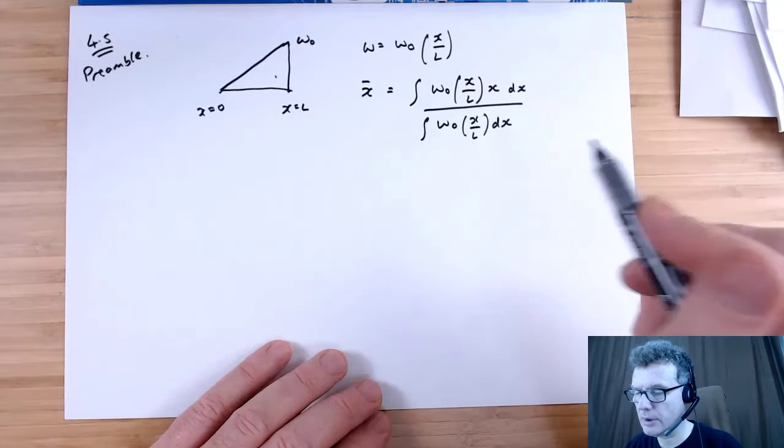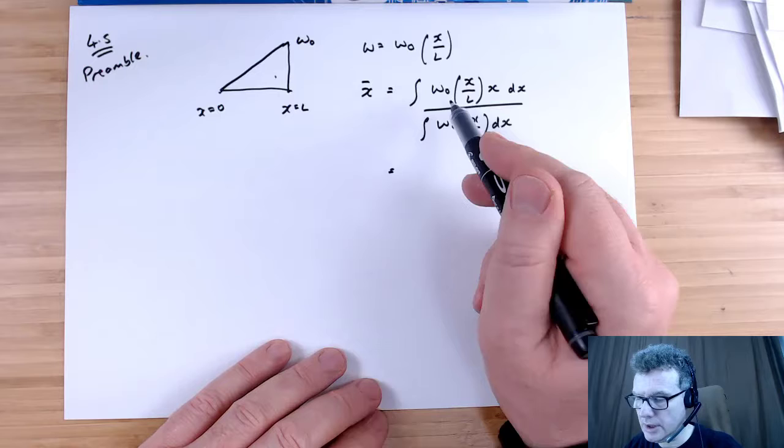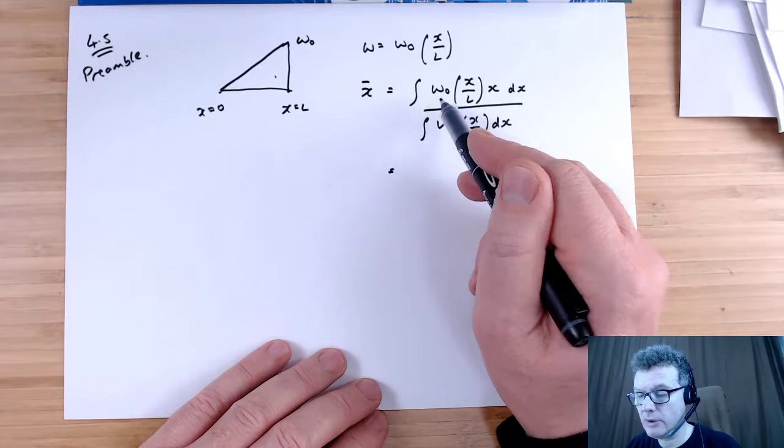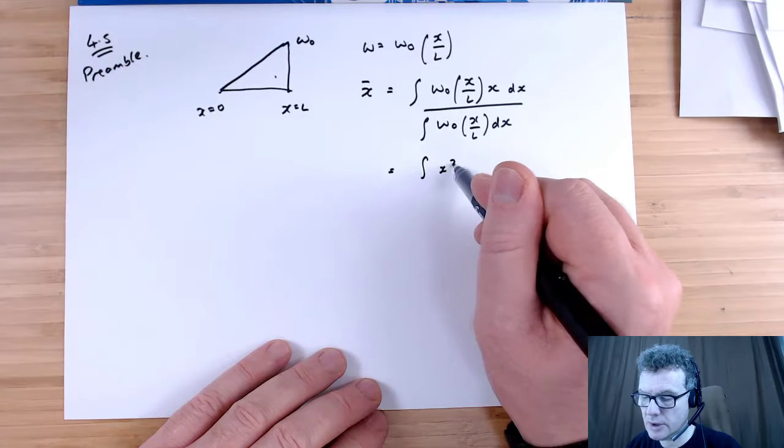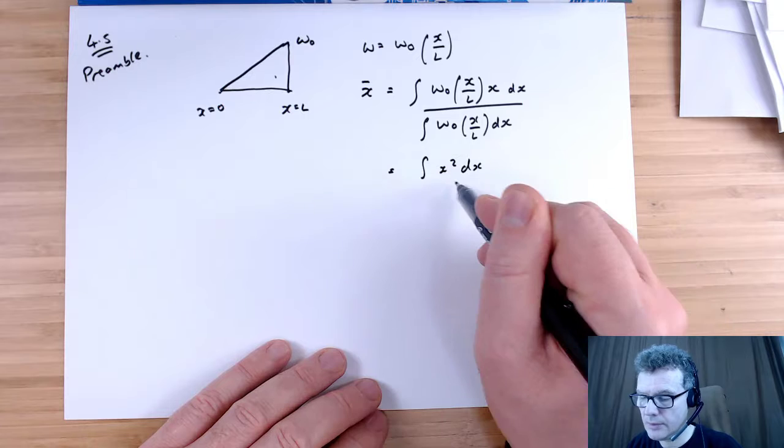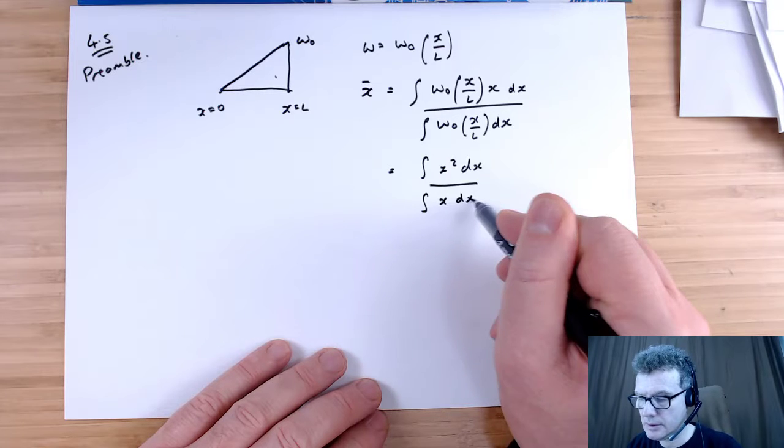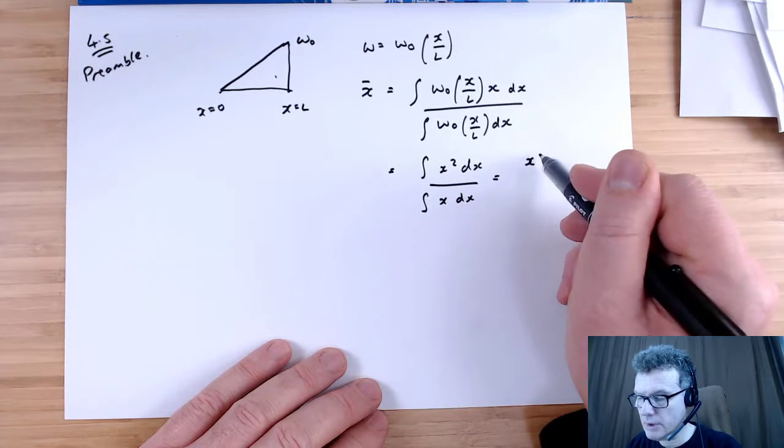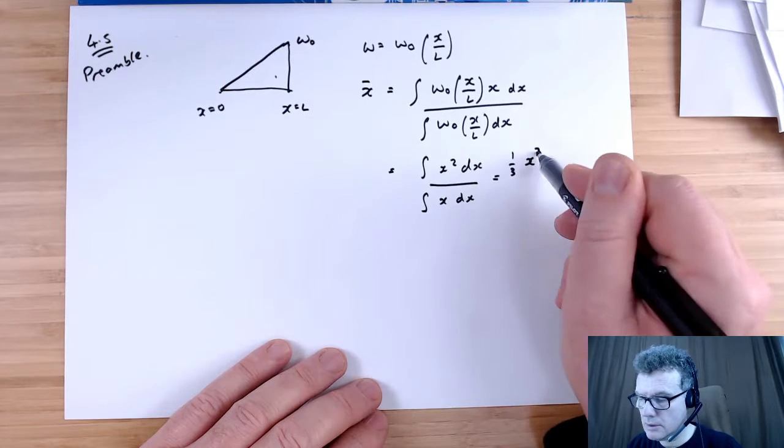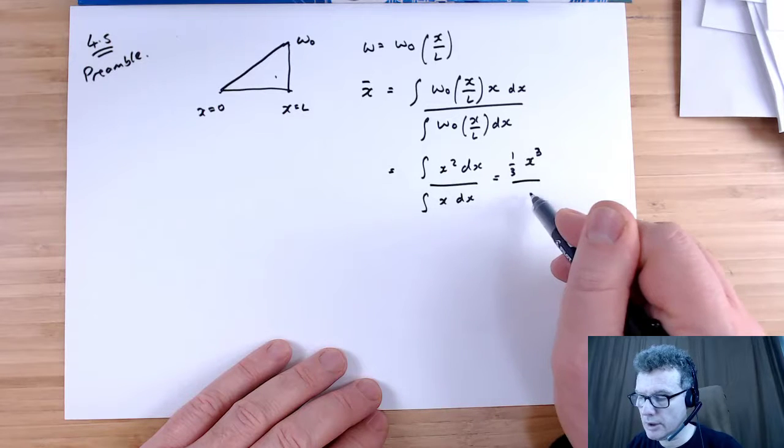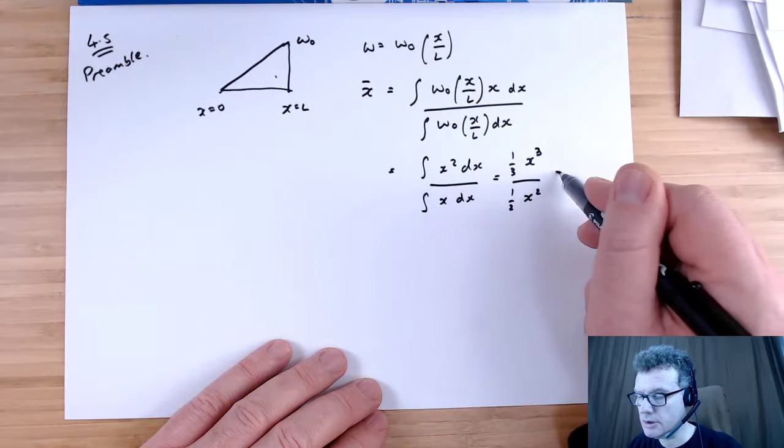Integrate that, then integrate this term here. We can see that we're going to end up with w0's canceling, L's canceling, and just ends up as x squared. On the bottom I need to integrate x, so that's straightforward, that gives me x to the power 3 divided by x squared over 2. Dividing by a half is the same as times by 2.